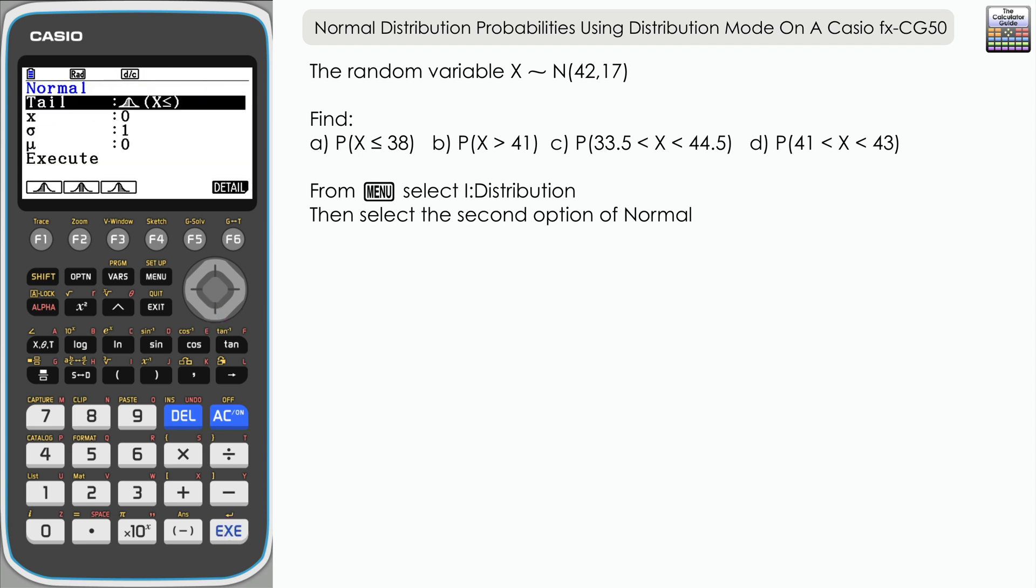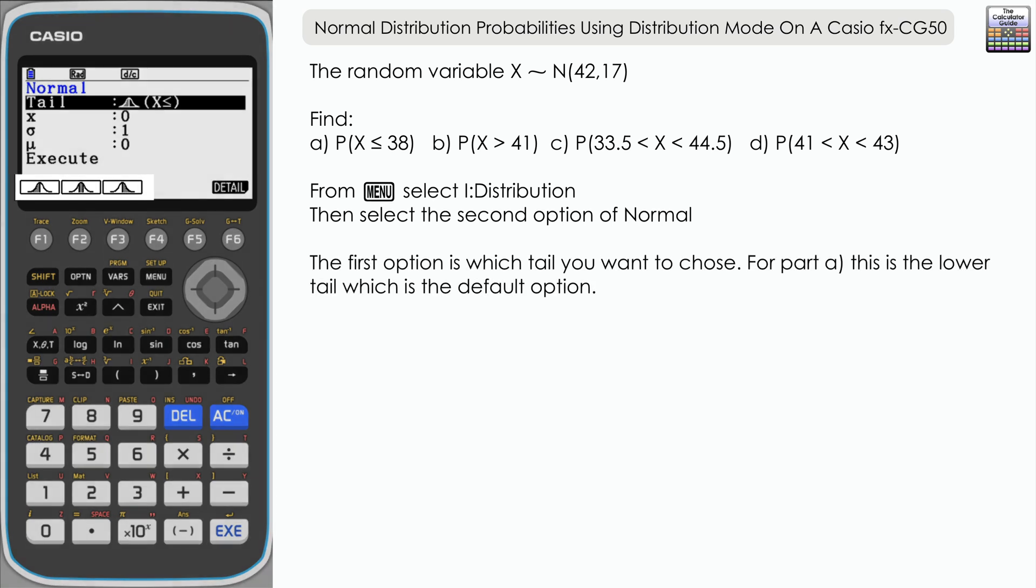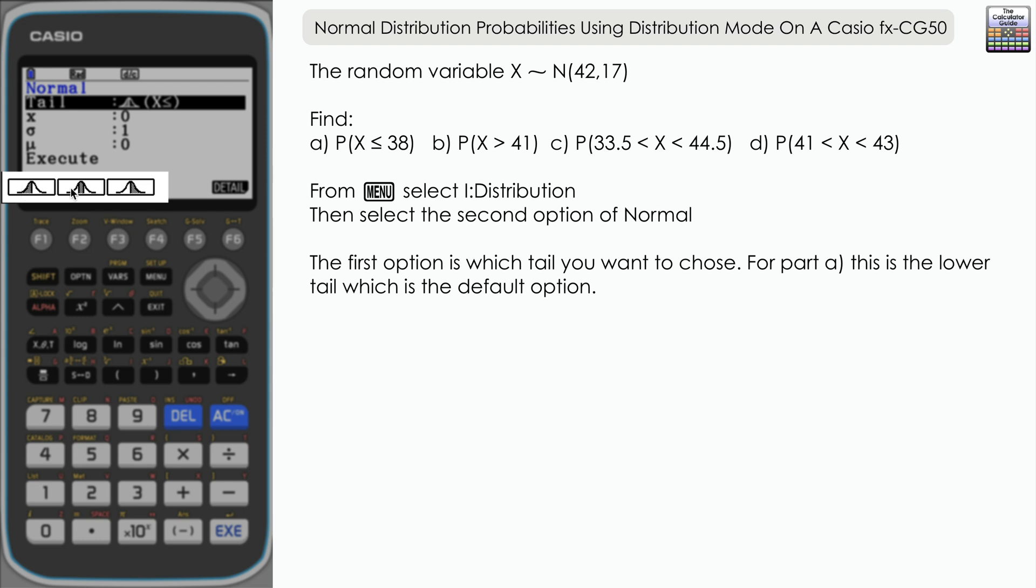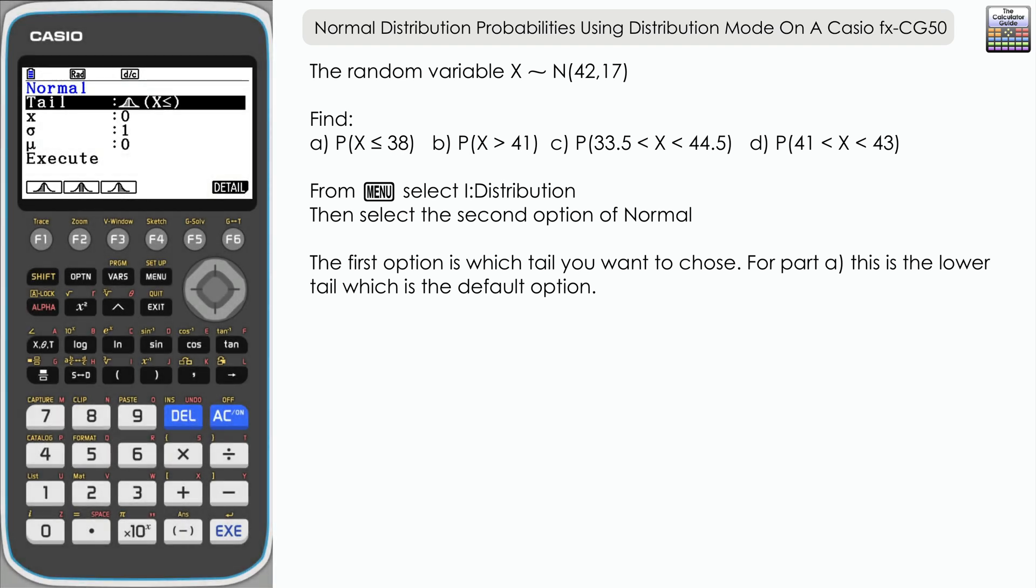The first option within the normal menu is which tail we want to use. You can see we have lower, center, and upper tails as options. Looking at part A, we're finding the probability that X is less than or equal to 38, so we want the lower tail option, which is already pre-selected by default.